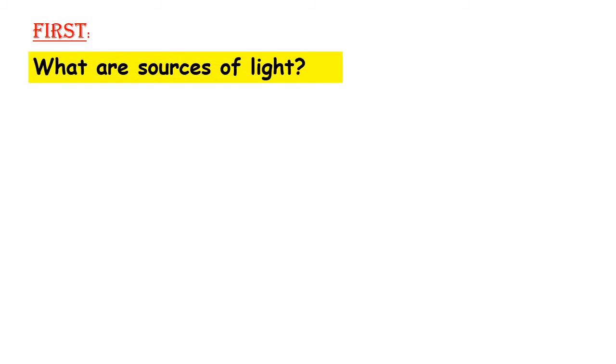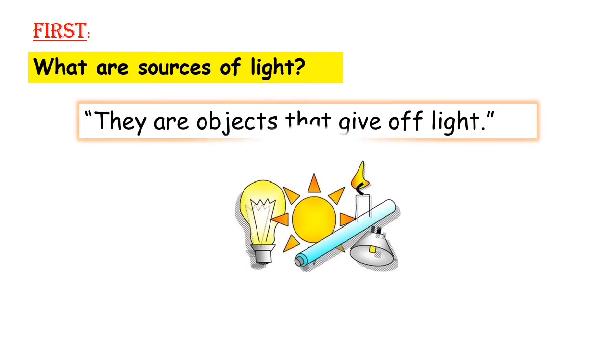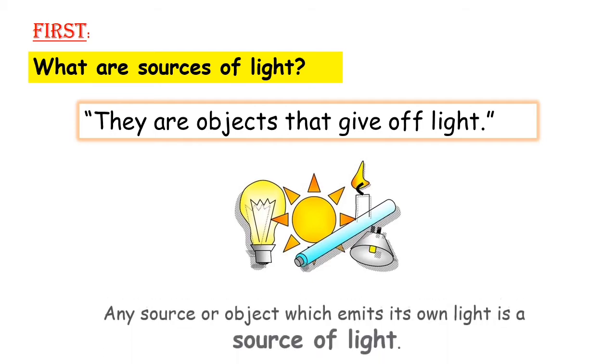First, what are sources of light? They are objects that give off light. Any source or object which emits its own light is a source of light.